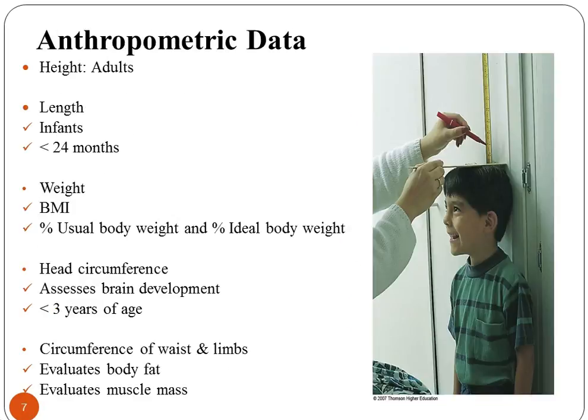Anthropometric data refers to measurements of the body — height, weight, and proportion. It is an essential component of clinical examination for infants, children, and pregnant women, and is used to evaluate both under- and over-nutrition. Accurate measurement of height and weight is essential. Results can evaluate physical growth of the child, and for growth monitoring, data are plotted on growth charts over time to calculate growth velocity, which can be compared to international standards.